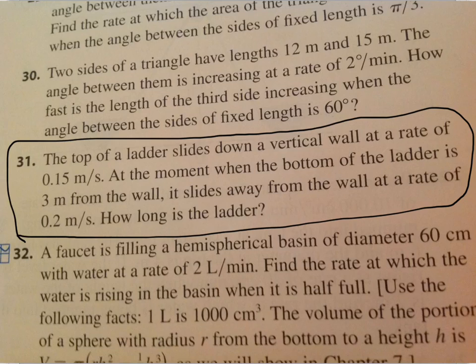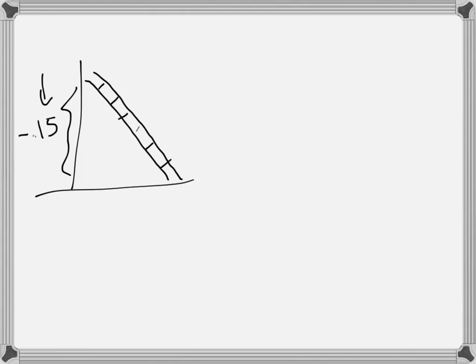Okay, so given all of that, let's draw a picture. So here's the wall, here's the ladder. And I said it's going down the wall at a rate of 0.15 meters per second, so we're going to use a negative. So the rate of change of y is negative, because I'm going to call this distance y. I'm going to call this distance x, like we did before.